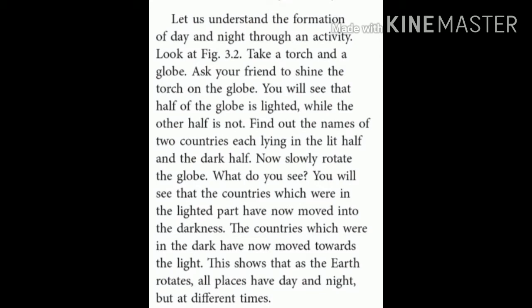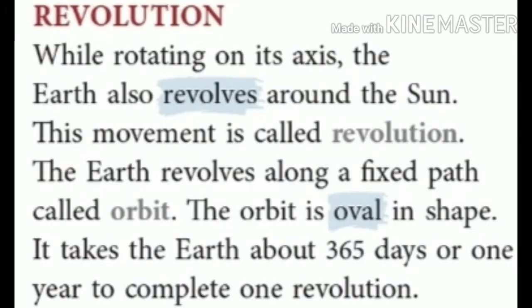The countries which were in the dark have now moved towards the light. This shows that the Earth rotates all places into day and night, but at different times. Revolution: while rotating on its axis, the Earth also revolves round the Sun. This movement is called revolution. The Earth revolves along a fixed path called orbit. The orbit is oval in shape. It takes the Earth about 365 days or one year to complete one revolution.